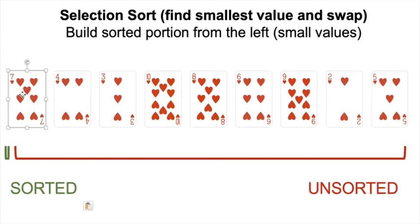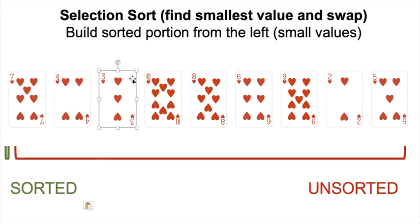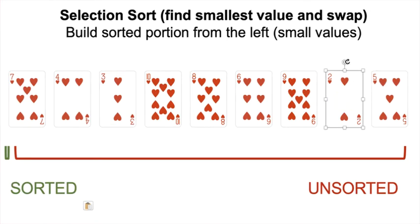We assume 7 is our smallest value and walk through to see if there's anything smaller. Is 4 smaller than 7? Yes — 4 is our new smallest. Is 3 smaller than 4? Yes — 3 is our new smallest. Is 10 smaller than 3? No. 8 smaller than 3? No. 6 smaller than 3? No. 9 smaller than 3? No. 2 smaller than 3? Yes — 2 is our new smallest. 5 smaller than 2? No. So 2 is our smallest value.